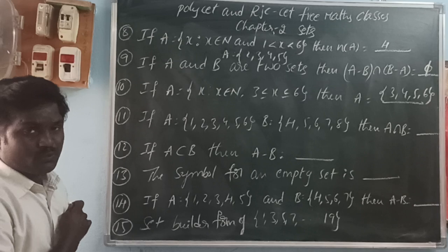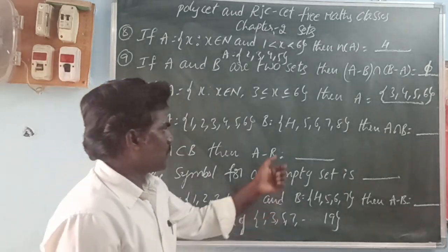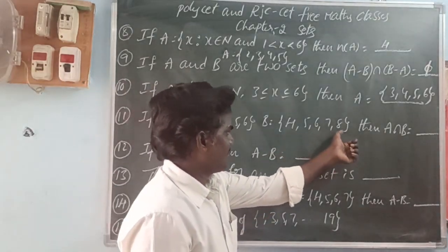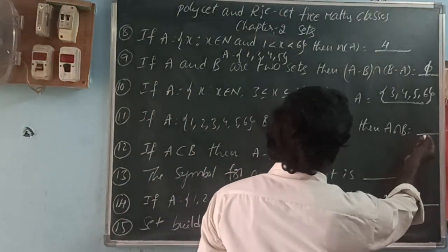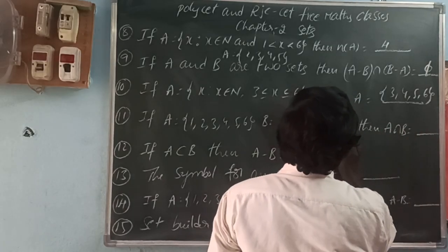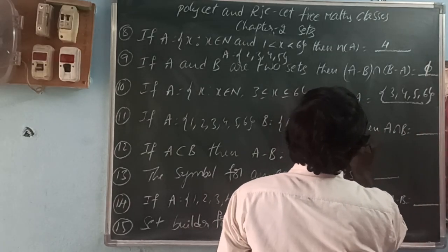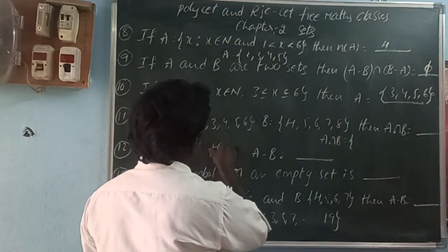Next: A equals {1, 2, 3, 4, 5, 6} and B equals {4, 5, 6, 7, 8}. Then find A intersection B. A intersection B means the common elements. So what are the common elements in these two sets?